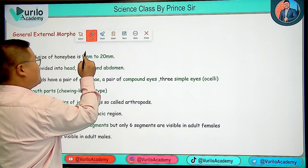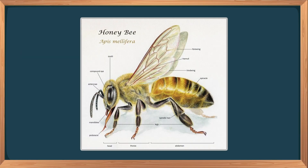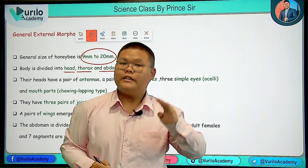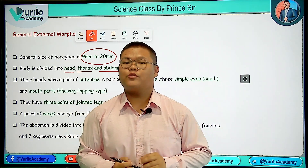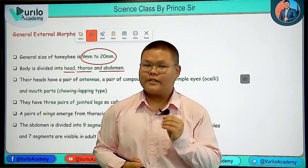Next, I am going to talk about the body division — the head, thorax, and abdomen. This represents the typical arthropod characteristics.